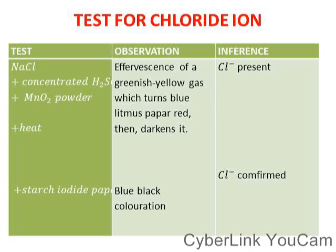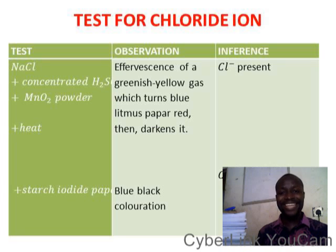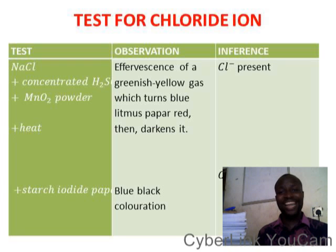After performing the first experiment as above, starch iodide paper is also used. You will see a blue-black coloration, which further confirms the presence of chloride ion. Put this down in your notes and read it over and over to understand the chemistry.